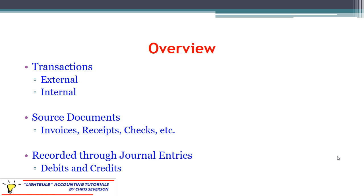As an overview, we're going to be talking about transactions throughout this section. Basically a transaction is something that happens financially and economically between one party and another party — something we need to record. A simple example of a transaction would be the company going to the vendor and buying supplies.